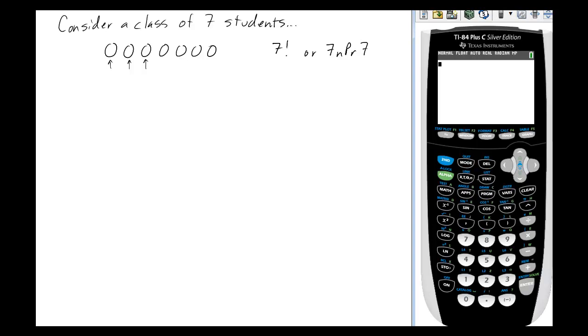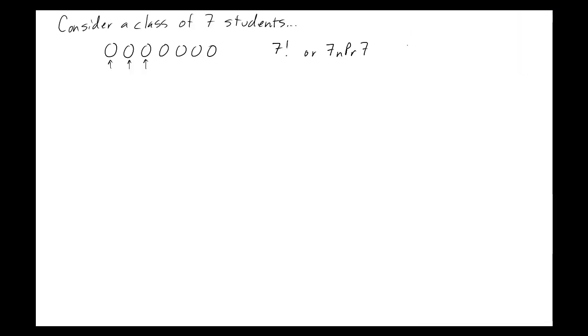So if we go ahead and pull up our fancy calculator to do that then we can go 7 math and it's in the probability there so we go over probability and we go 4 exclamation point and we get a total of 5,040 ways that they could actually sit in 7 chairs. Now this is just different organizations.